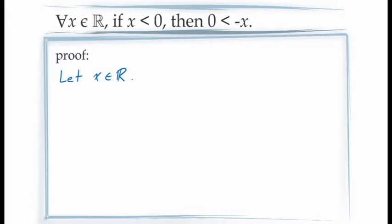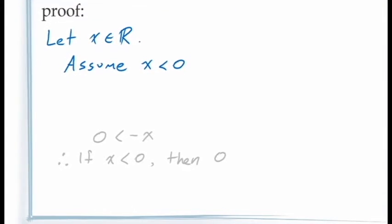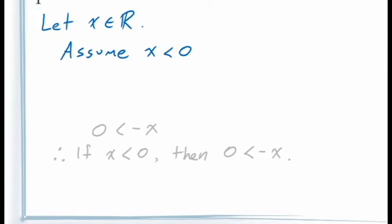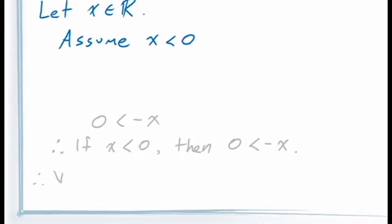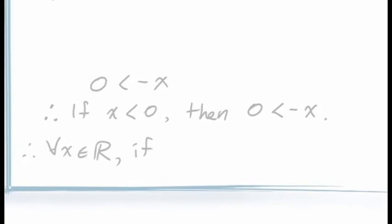At this point, we're required to demonstrate 'if x < 0, then 0 < -x,' which is a conditional statement. Using the method of direct proof, we introduce an assumption that the antecedent is true: assume x < 0. Our job will then be to demonstrate the consequent, showing that -x > 0. If we're able to do this successfully, the principle of conditional proof allows us to conclude: therefore, if x < 0, then -x > 0. And because we are doing this for an arbitrary constant x, the principle of universal generalization allows us to conclude this is true for all values of x in the real numbers. This forms the basic structure of our proof.